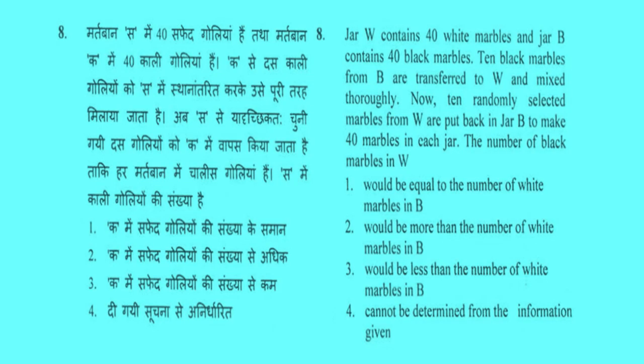Eighth problem: Jar W contains 40 white marbles and jar B contains 40 black marbles. 10 black marbles from B are transferred to W and mixed thoroughly. Now, 10 randomly selected marbles from W are put back in jar B to make 40 marbles in each jar. The number of black marbles in W. There are 4 options. Option 1 would be equal to the number of white marbles in B. Option 2 would be more than the number of white marbles in B. Option 3 would be less than the number of white marbles in B. Option 4 cannot be determined from the information given.